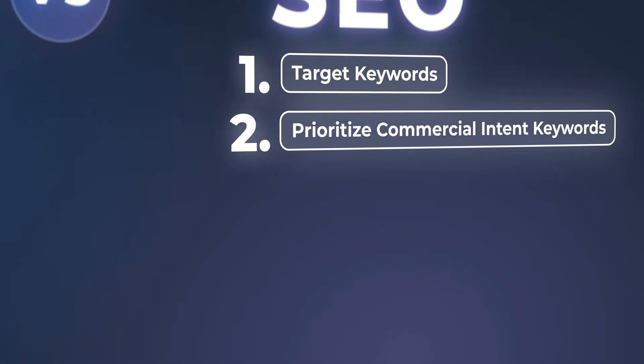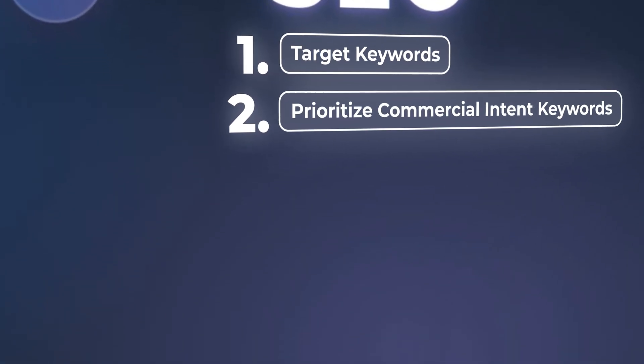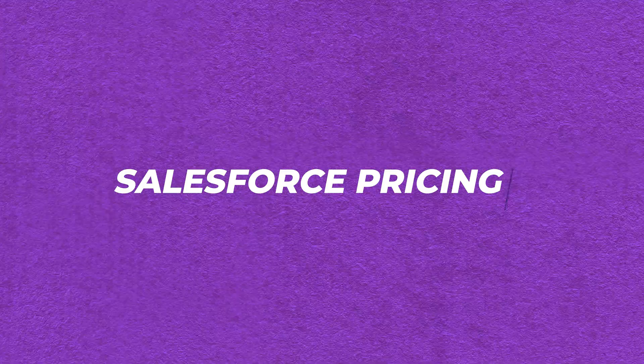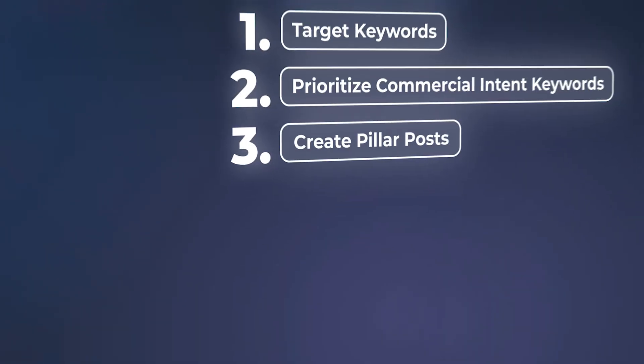Number two, you want to prioritize commercial intent keywords, like 'best product' or 'product versus competitor' or 'product alternatives.' So you might say Salesforce versus HubSpot, or you might say Salesforce pricing as an example. These are all bottom of the funnel.